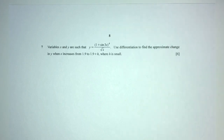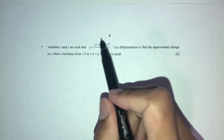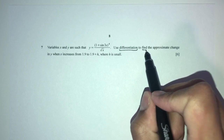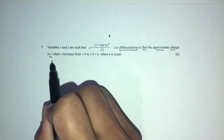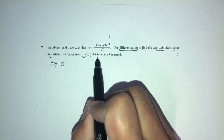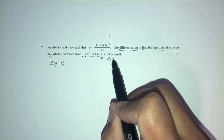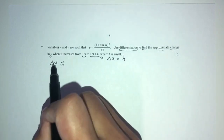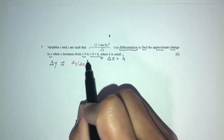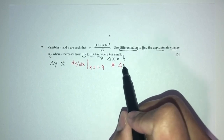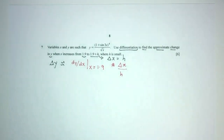Let's move on to question 7. Variables x and y satisfy y equals (1 plus sin 3x) to the power 4 divided by root x. We use differentiation to find the approximate change in y when x increases from 1.9 to a nearby value h. The formula is delta y approximately equals dy/dx at x equals 1.9, multiplied by the change in x.